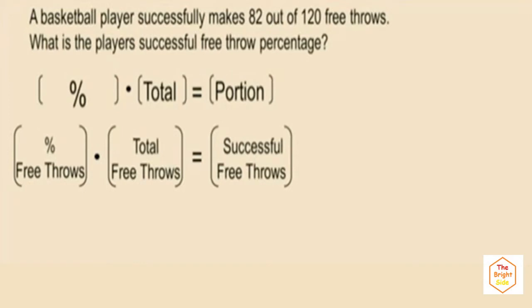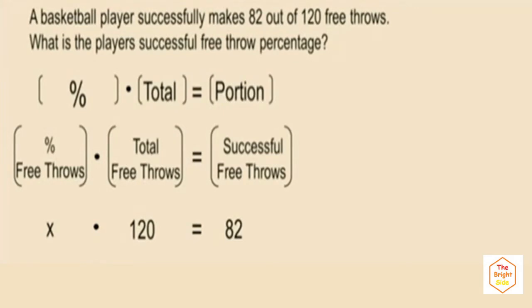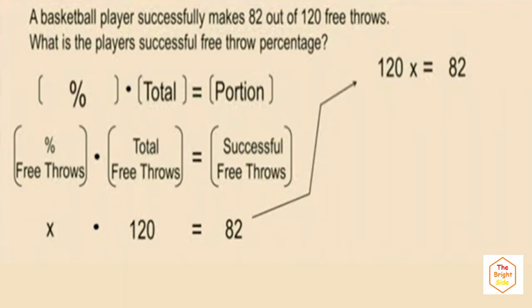We're looking for the percent, so it will be represented by the variable x. Times the total free throws, which was 120, equals the successful free throws, which is 82. Notice we were looking for the percentage and were given the total and the portion. Our equation is 120x equals 82.